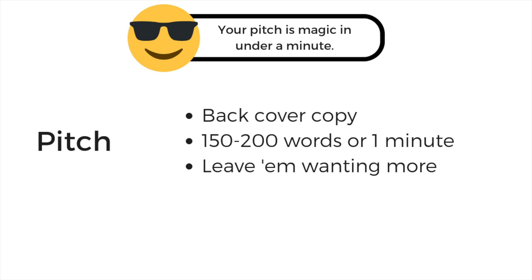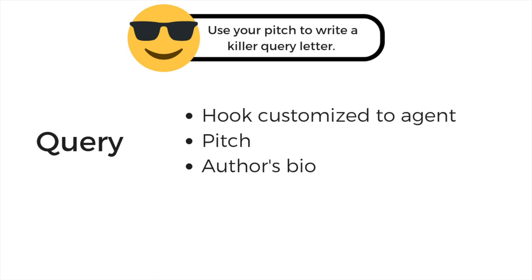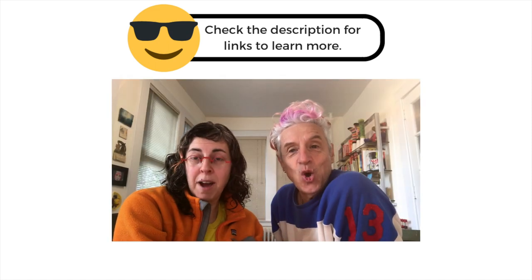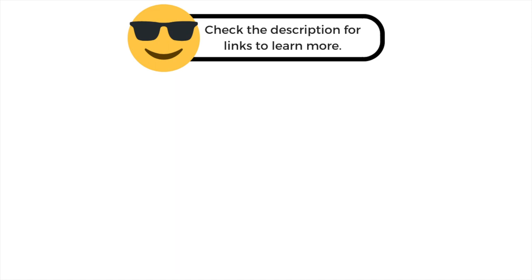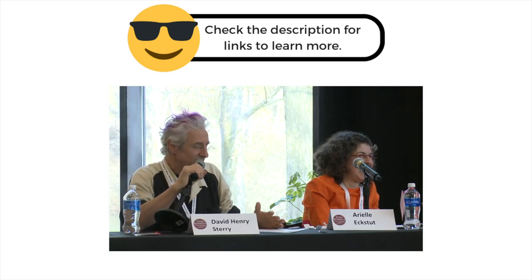In a pitch, for instance, let's say you're pitching a murder mystery — you wouldn't say 'and in the end, the butler did it.' Whereas in a summary, you would, because the summary shows the entire arc of your book. An agent or editor wants to know that you understand how a plot works — they want to see the appropriate twists in the plot, how you tie things up, and that there's a strong beginning, middle, and end. A pitch, on the other hand, is something that makes someone say, 'Oh my god, I've got to read that book because I want to know what happens, or what I can learn.'